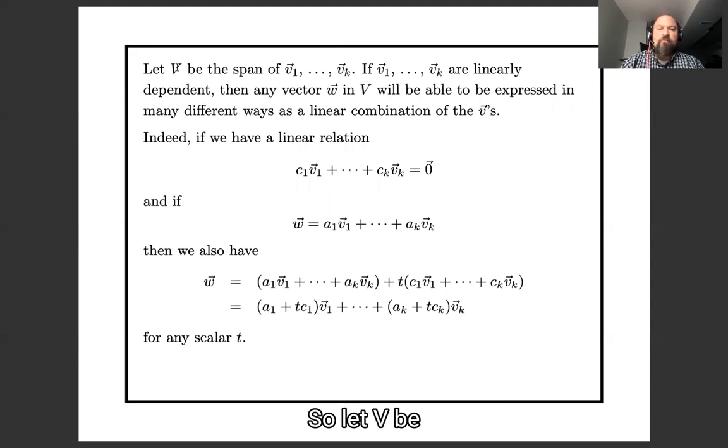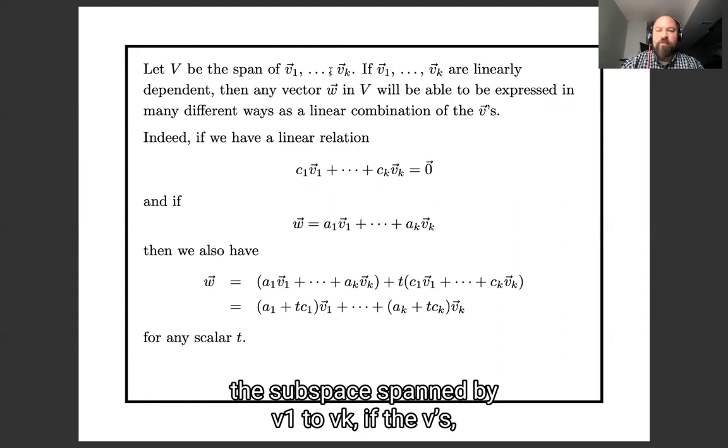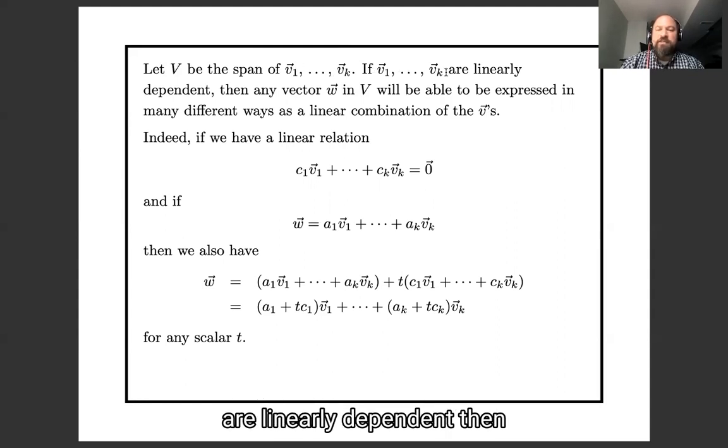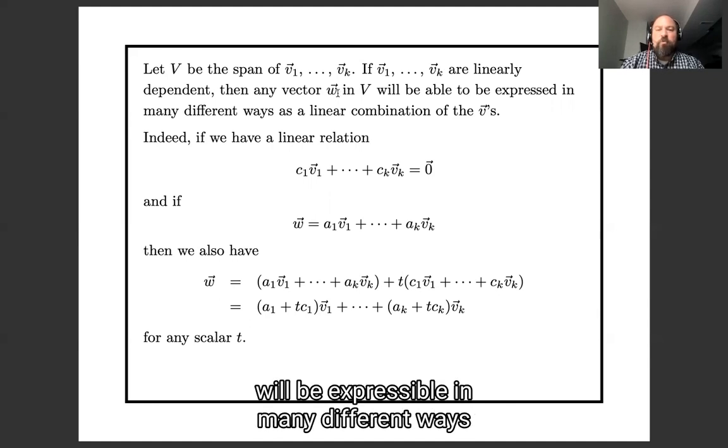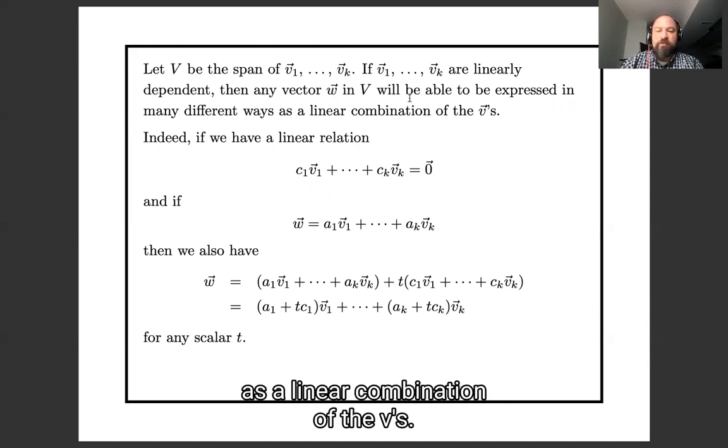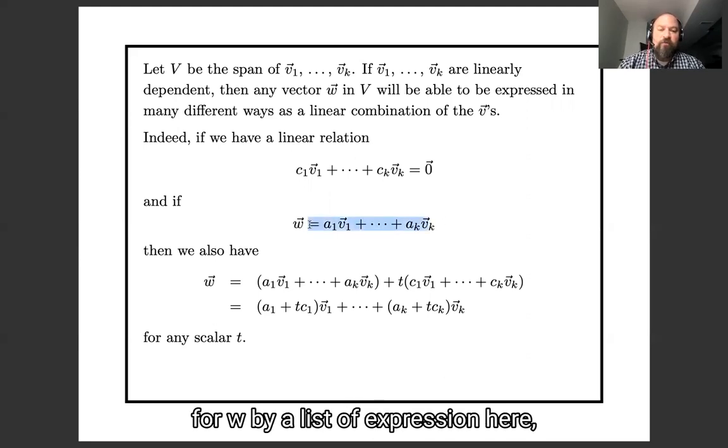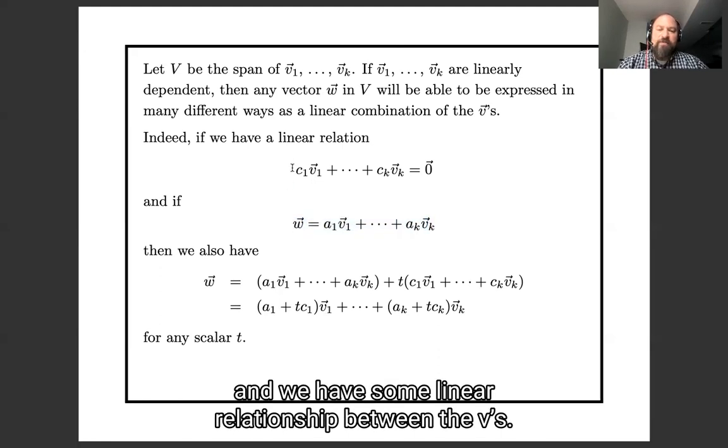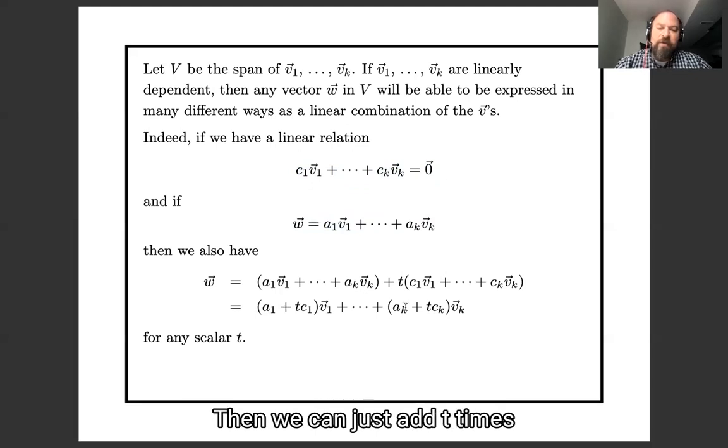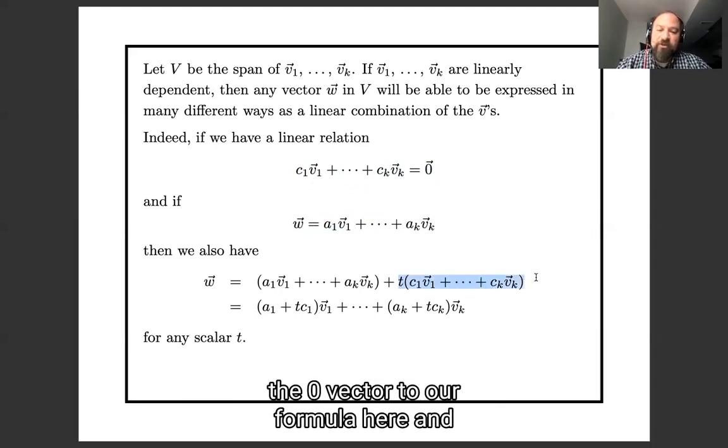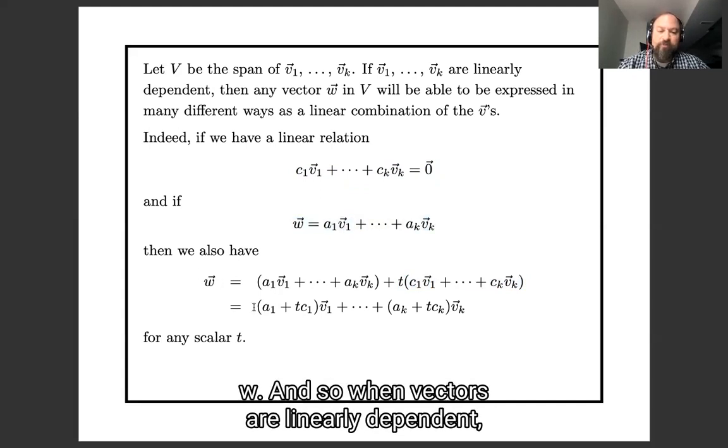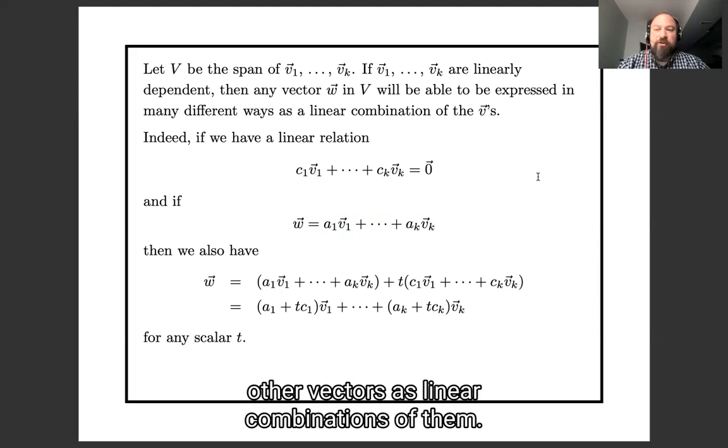Okay, so let V be the subspace spanned by v1 through vk. If the v's are linearly dependent, then any vector w will be expressible in many different ways as a linear combination of the v's. Because if we take any expression for w, like this expression here, and we have some linear relationship between the v's, then we can just add t times the zero vector to our formula here, and get another expression for w. And so when vectors are linearly dependent, there are many different ways to write other vectors as linear combinations of them.